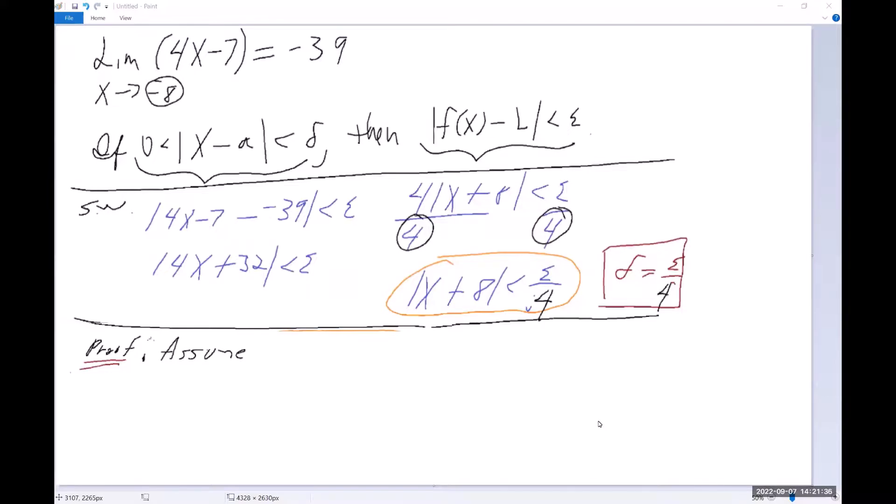Okay. So now that we know that delta is equal to epsilon over four, then we can write this line here, which is the assumption that the absolute value of x minus negative eight is less than delta, which is going to be equal to epsilon over four, because we've just found that delta.